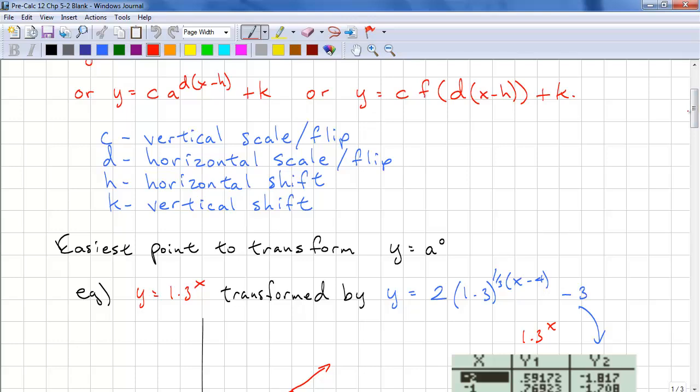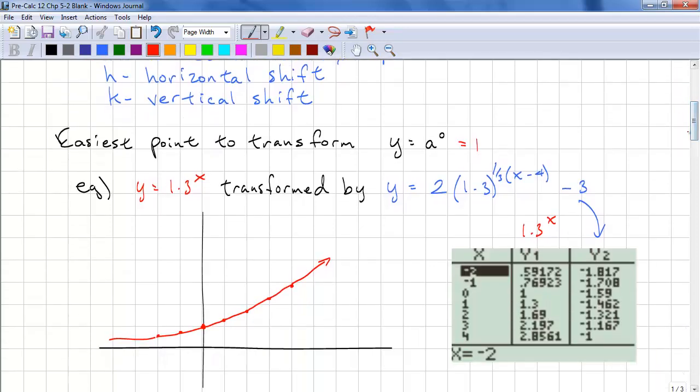What is the easiest point to transform? That is y equals a to the power of 0 because this equals 1. Let's look at an example of a transformation, y equals 1.3 to the power of x. We're going to transform this by y equals 2 times 1.3 raised to the power of 1 third times x minus 4 in brackets and minus 3. Here's the table of values, but let's do this like we've done our other transformations.